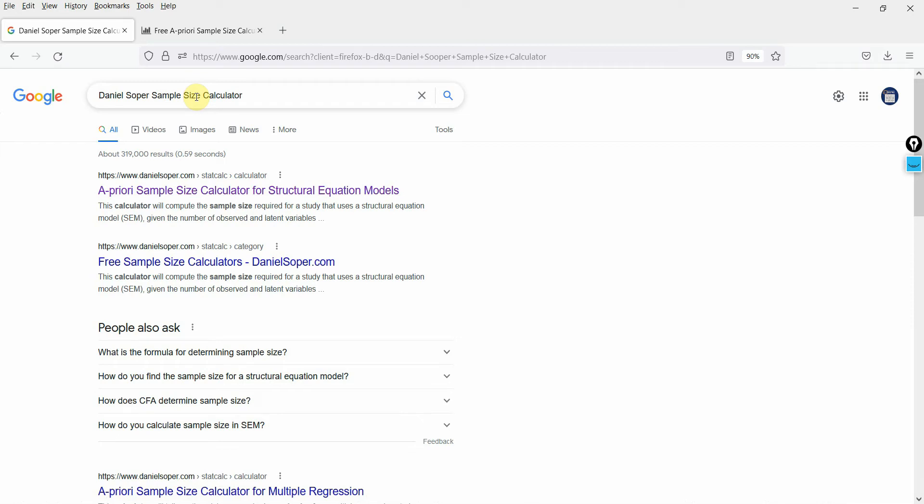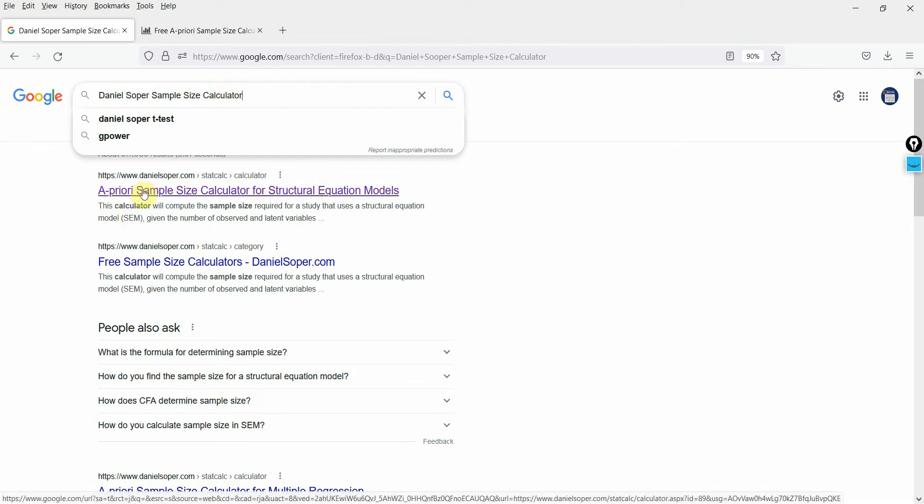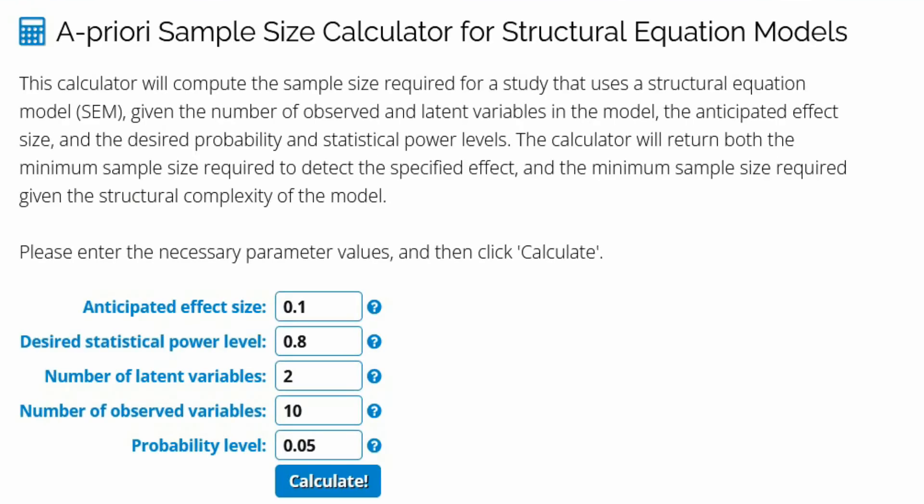Now it's a very easy calculator to use and what you can do is just type in Daniel's super sample size calculator in Google and the link will be shared in the description as well. Once you click it you will have this particular sample size calculator here.